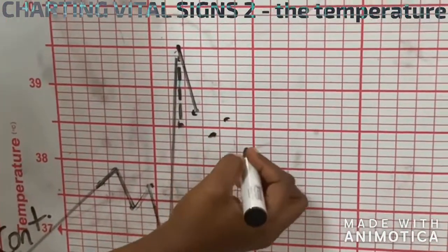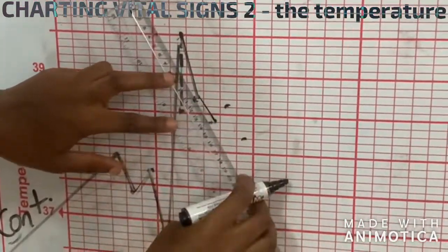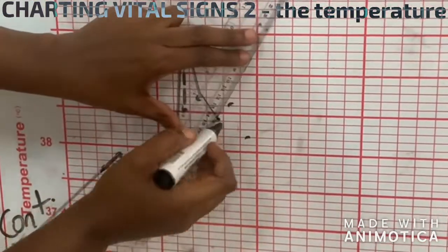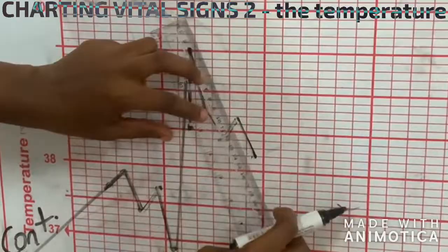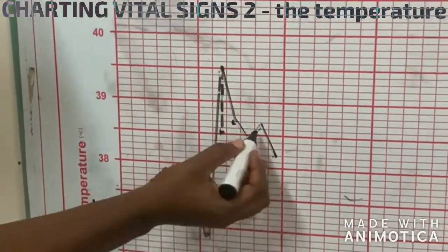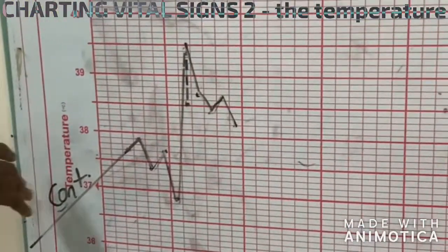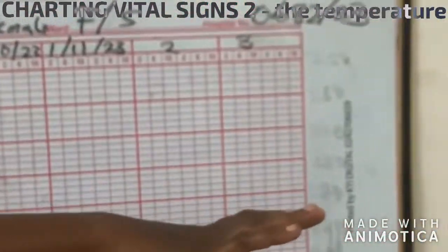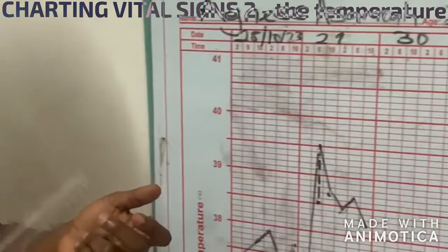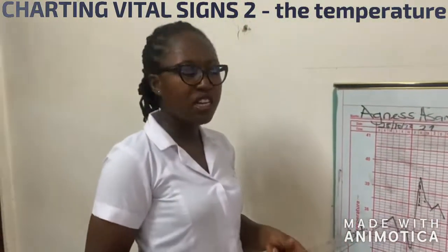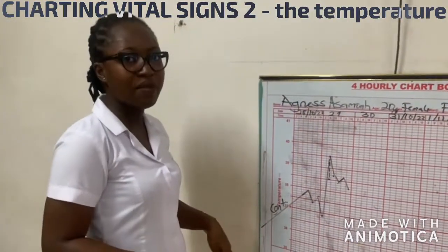So we draw it here, then the charting continues. Maybe it comes to this because interventions are being made and then it has started dropping. So you keep charting. So this is how you chart the temperature. You keep charting until the sheet is full for the week, then you change the sheet. And we don't chart temperature alone in vital signs. In the next video, you'll find how to chart the pulse alongside the temperature. At the same time you are checking temperature, you are checking pulse.